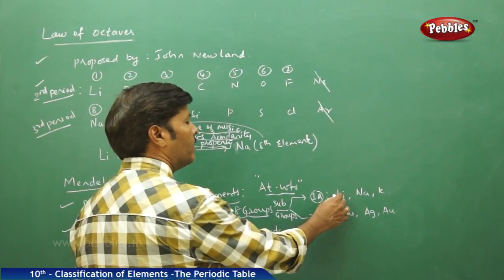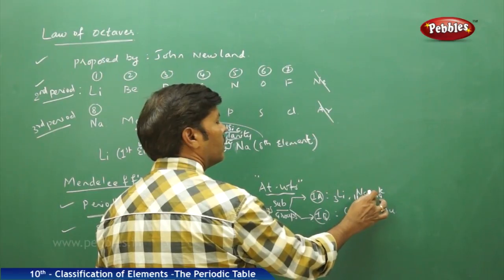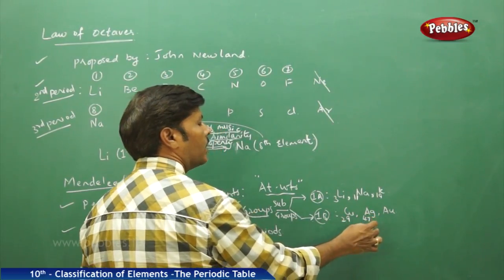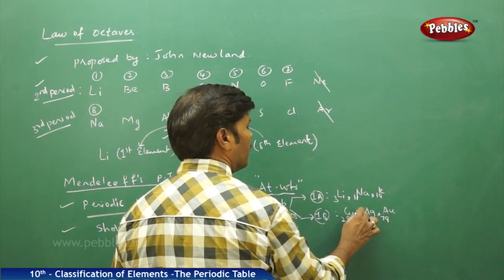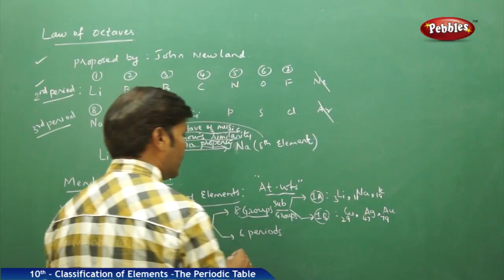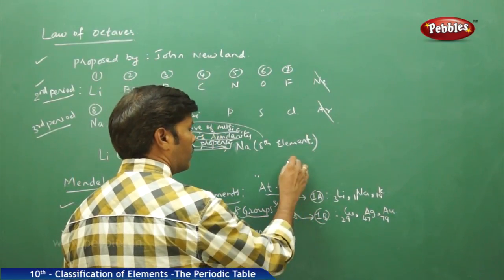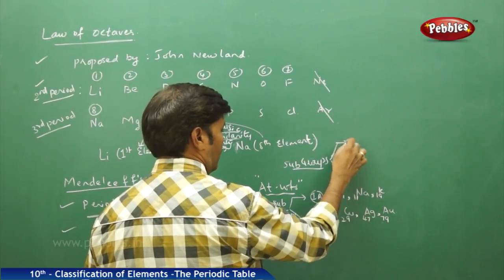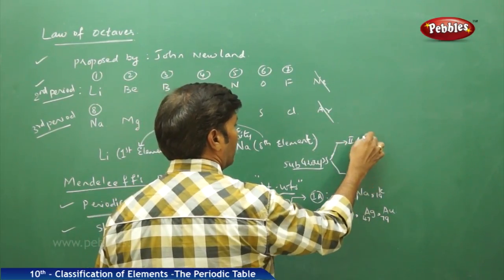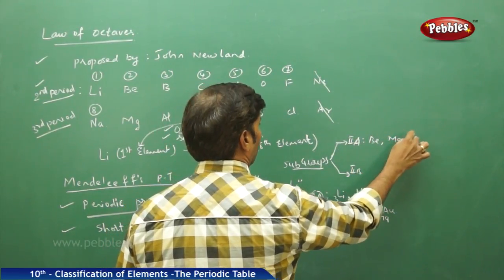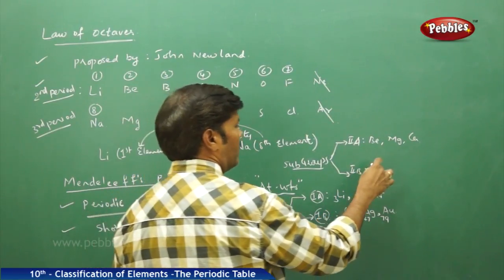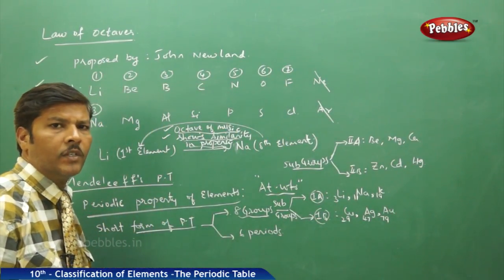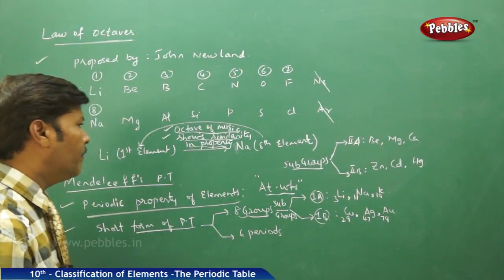The atomic numbers are: lithium 3, sodium 11, potassium 19 in the 1A group; copper 29, silver 47, and gold 79 in the 1B group. Similarly, in the 2A group we have beryllium, magnesium, and calcium; and in the 2B group we have zinc, cadmium, and mercury. Mendeleev successfully gave classification for these subgroups showing similarities among elements.